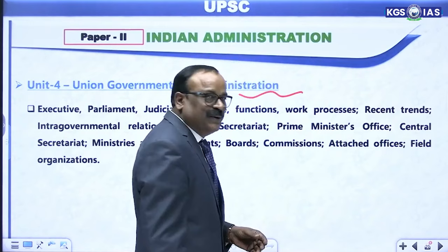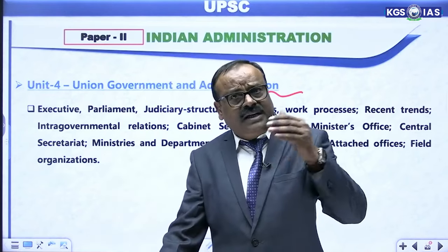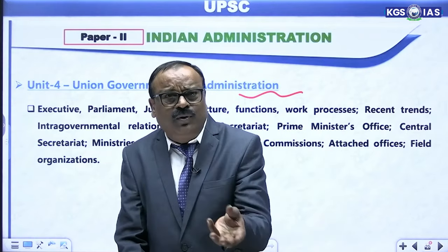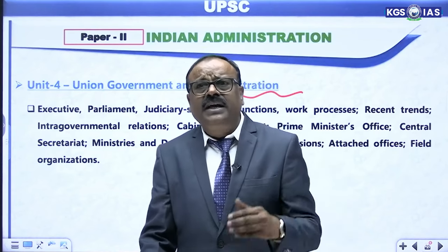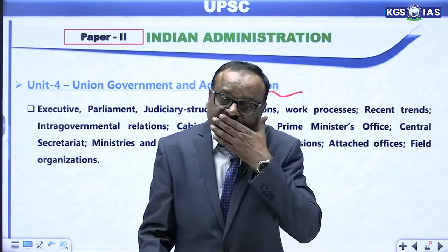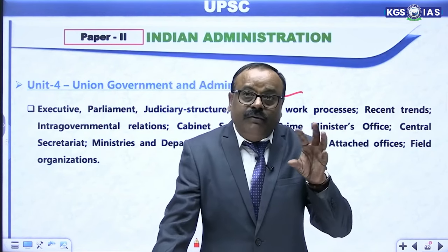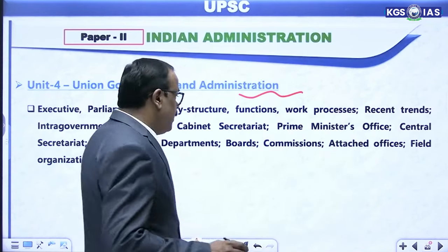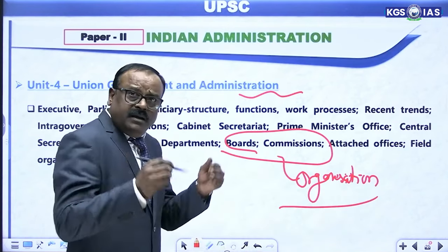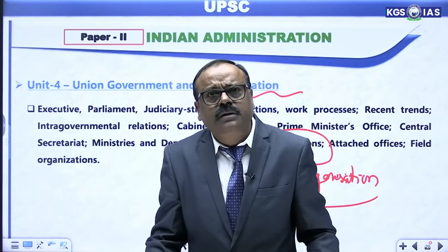Union government covers almost all things — executive, parliament, judiciary, structure and forms, work process, recent trends in all three organs of government, intergovernmental relations, cabinet secretary, PMO, ministries and departments, attached offices, field offices, boards and commissions. These are directly related to the topics given in the organizations unit. If you remember these things, you will not need to study repeatedly — only add some points specific to India.